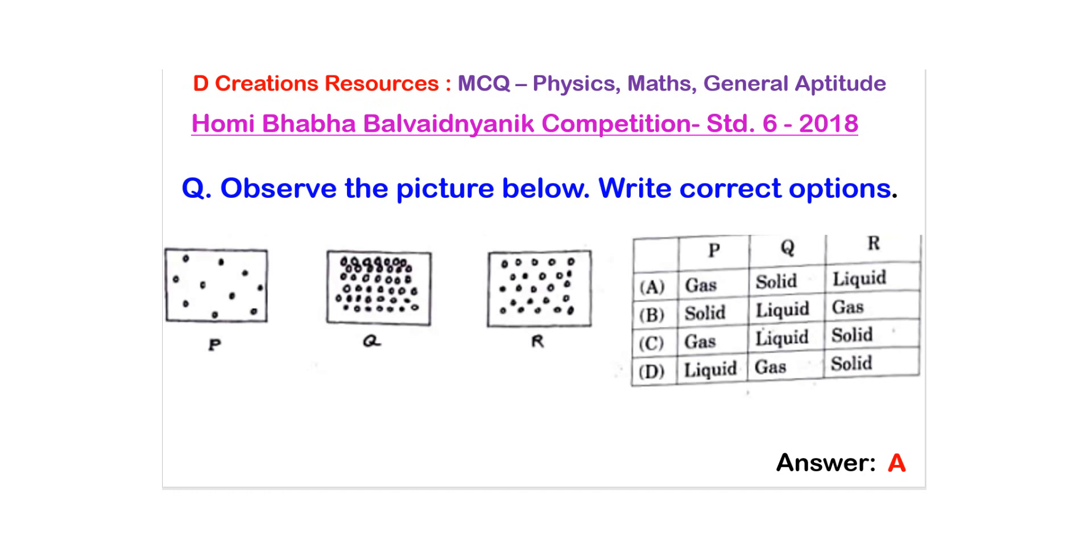Now you have to look for options where P has to have gas as the designated state of matter and you can see that in option A and C that is the situation.